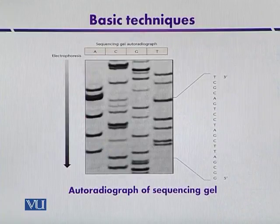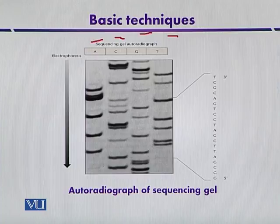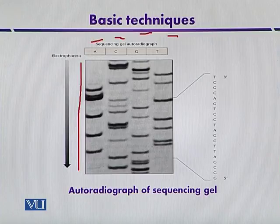This is a typical autoradiograph of a sequencing gel. Different bases have been placed in different columns — adenine, cytosine, guanine, and thymine. By using gel electrophoresis, the DNA fragments were separated. After separation, all these DNA fragments were radio labeled and then placed with X-ray film, and the separation of different molecules was visible in the autoradiograph.